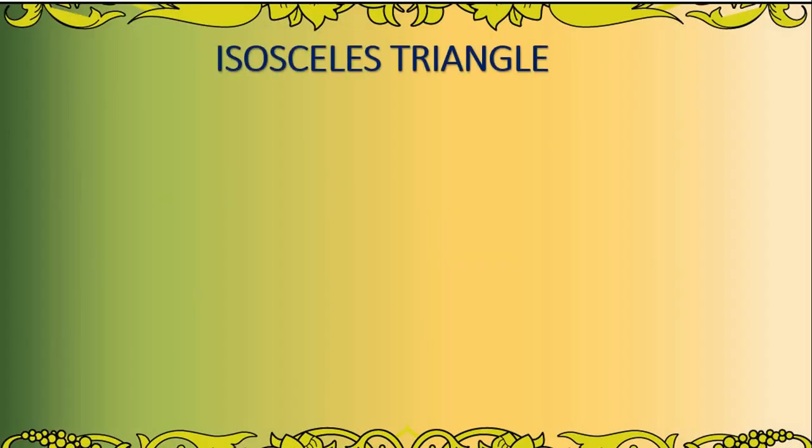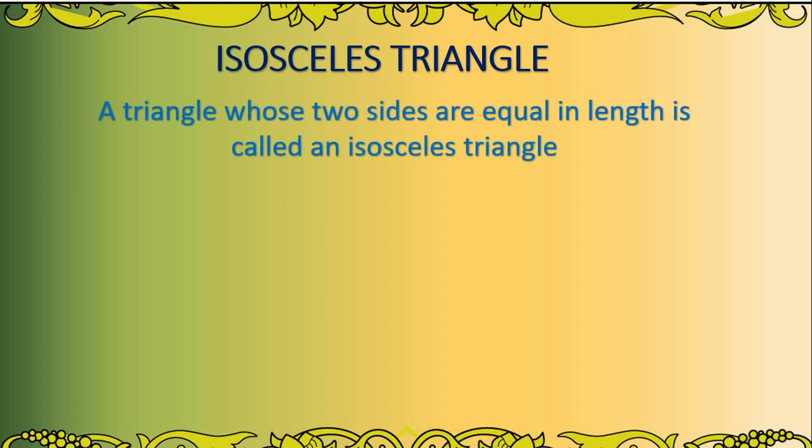An isosceles triangle is a triangle whose two sides are equal in length. Consider a triangle ABC where AB equals AC.